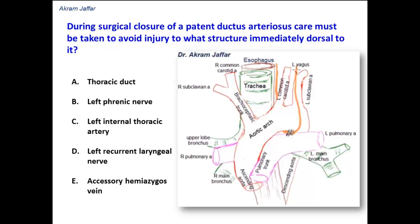You can see here the relation to the ligamentum arteriosum. There is a nerve that passes behind the ligamentum arteriosum and behind the arch of the aorta, ascends up going to the larynx between the trachea and esophagus, in the groove between the trachea and esophagus.